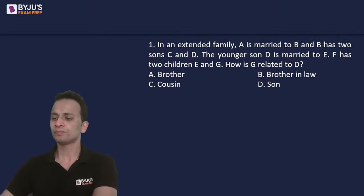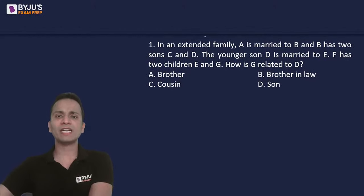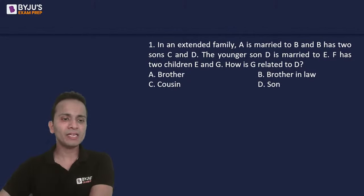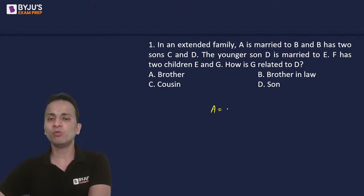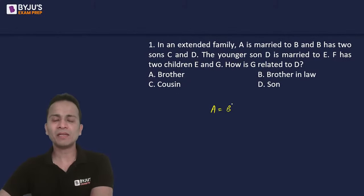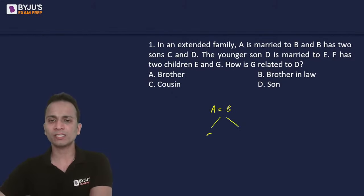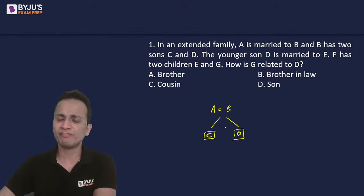Question number one is on your screen now. In this case, it is given that in an extended family, A is married to B and B has two sons, C and D. So A and B will be husband and wife. Right now I don't know the gender of A and B. A is married to B and B has two sons C and D, so A and B will have two sons C and D. We know the gender of these sons — obviously they are sons, so they will be males.